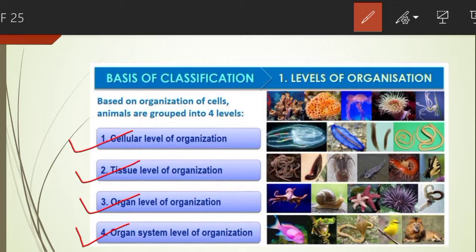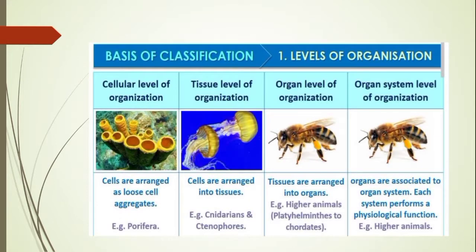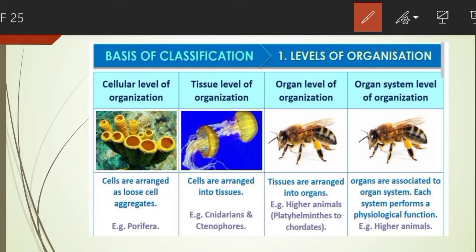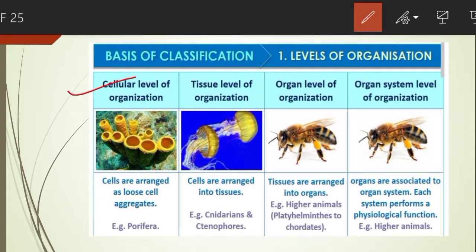The first is cellular level of organization. In this level, the body shows some division of labor among cells. The cells are remarkably independent and can change their form and function. The body consists of many cells arranged as loose cell aggregates, but the cells do not form tissues — each cell functions independently. Example: Porifera.